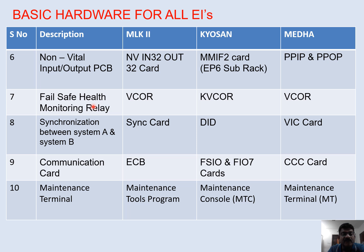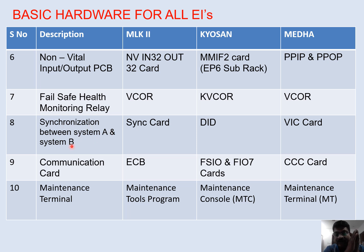The failsafe health monitoring relay — this is just like cross-protection in the normal signaling system, a cross-protection system for the whole system. This is the vital cut-off relay in MLK2, the Kyosun vital cut-off relay in Kyosun, and also called vital cut-off relay in MEDA. For synchronization between System A and System B: EI has redundancy with two systems working in parallel. In Microlog 2 a sync card is used for synchronization — both systems speak with each other regularly and share their information. In Kyosun it is called the DID card, and in MEDA it is called the VAC card.